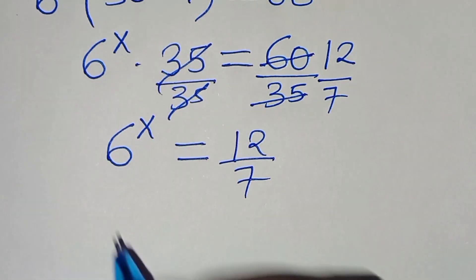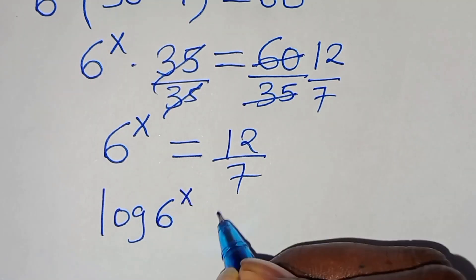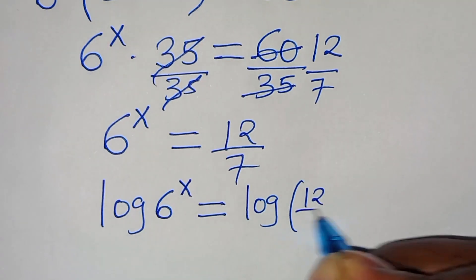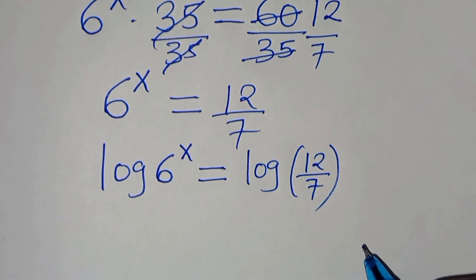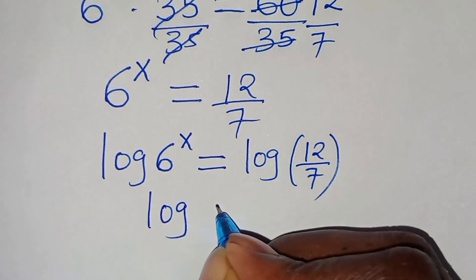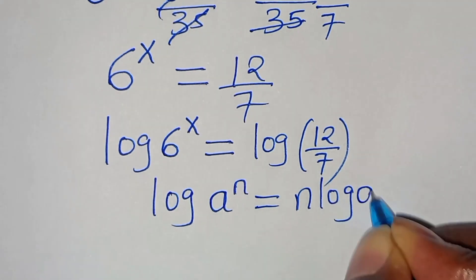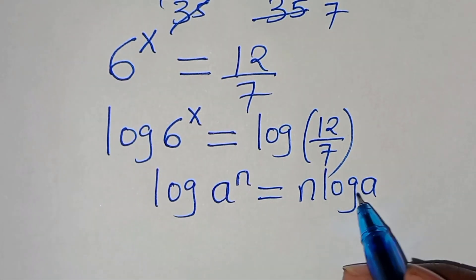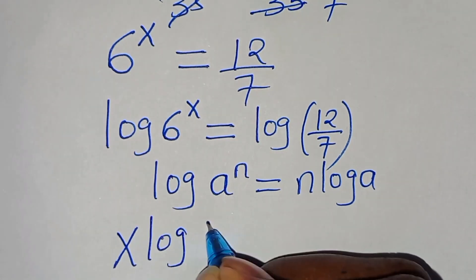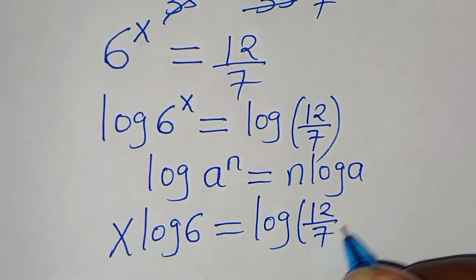To solve for x, we introduce logarithm on both sides. Here we have log of 6 to the power of x, this is equal to log of 12 over 7. The next step is that log of 6 to the power of x is in the form of log of a to the power of n, which can be expressed as n times log a. Applying this power property of logarithm, log of 6 to the power of x becomes x times log 6, equal to log of 12 over 7.